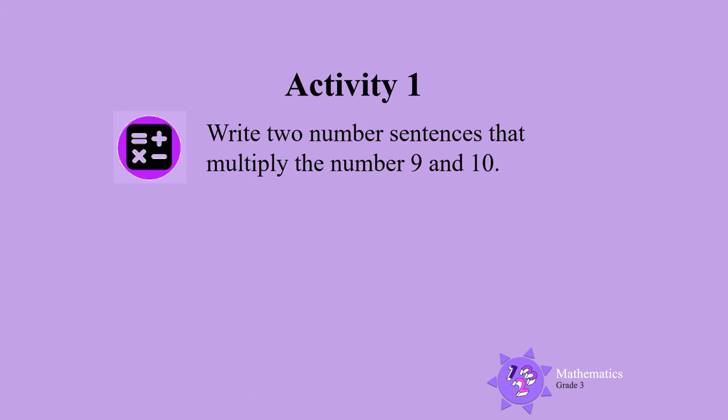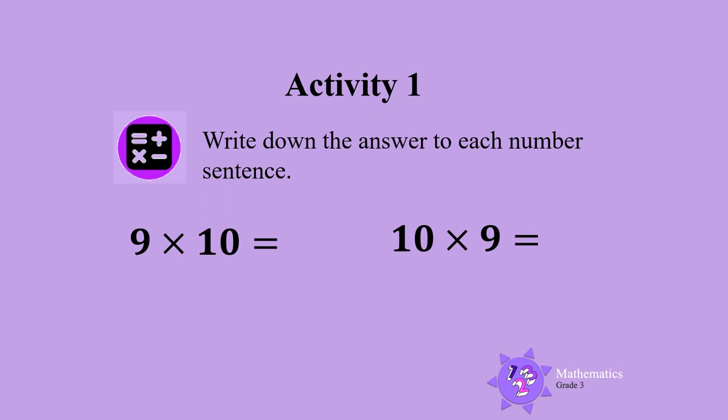Activity 1. Let's write two number sentences that multiply the numbers 9 and 10. Ready? You could write 9 times 10 equals or 10 times 9 equals. Now, let's write down the answer to each of these number sentences. 9 times 10 is 90, and 10 times 9 is 90.